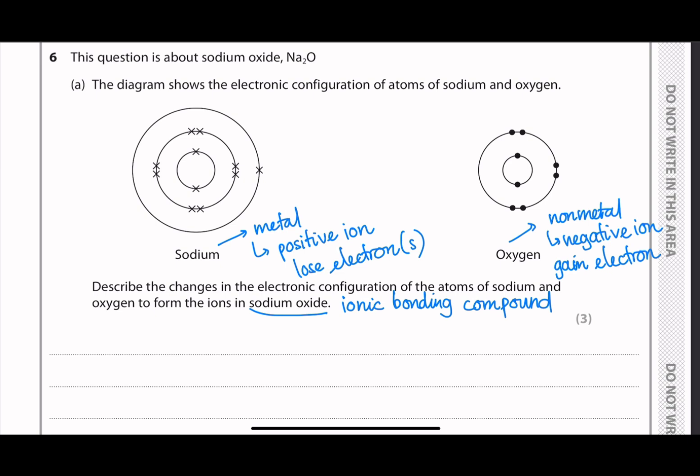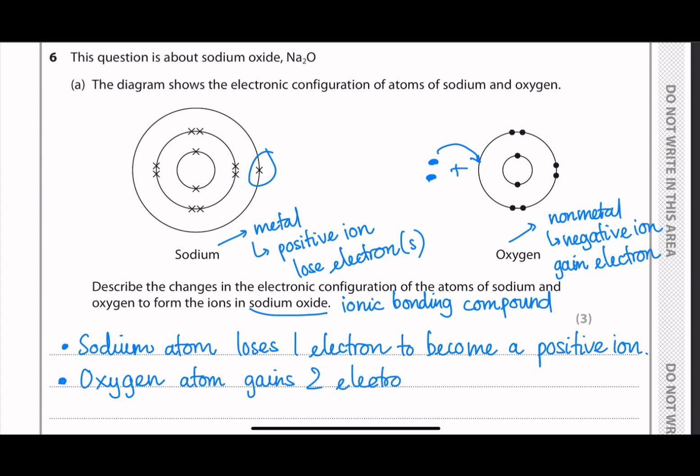So this question has three marks, so you'll be awarded for each of the marks for saying the change in each atom. So the first mark, the sodium atom loses one electron, because sodium is in group 1, to become a positive ion. And then the next mark is for saying that the oxygen atom gains two electrons to become a negative ion, because the oxygen atom is in group 6. That means it has six valence electrons and it needs two more to complete the full electron shell.